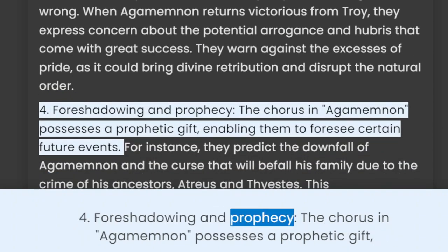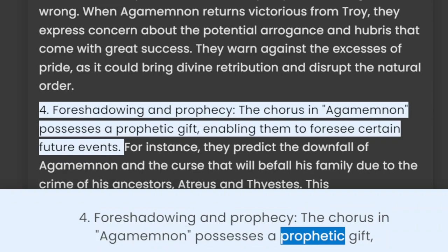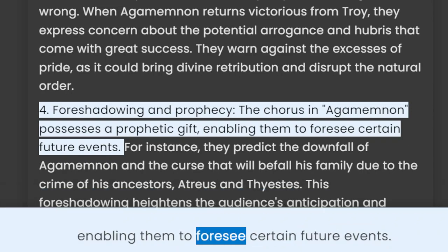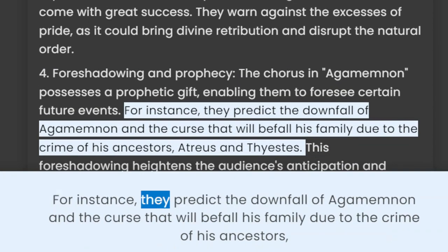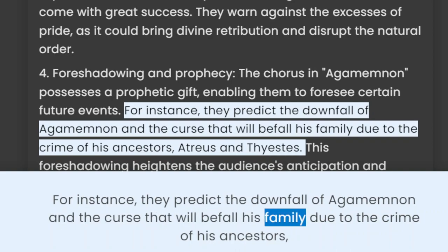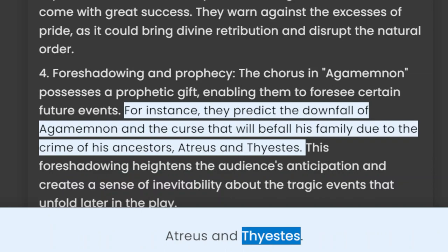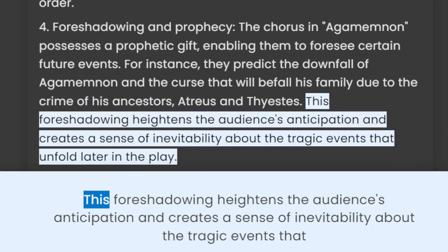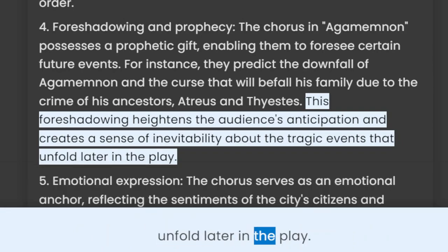4. Foreshadowing and prophecy. The chorus in Agamemnon possesses a prophetic gift, enabling them to foresee certain future events. For instance, they predict the downfall of Agamemnon and the curse that will befall his family due to the crime of his ancestors, Atreus and Thyestes. This foreshadowing heightens the audience's anticipation and creates a sense of inevitability about the tragic events that unfold later in the play.